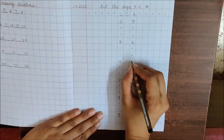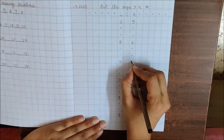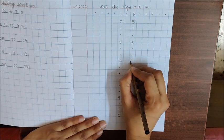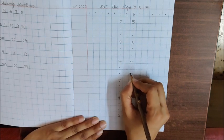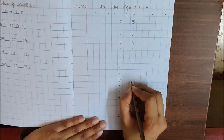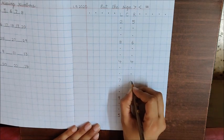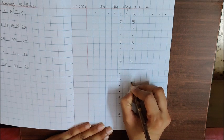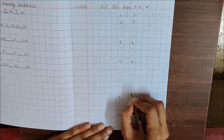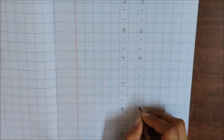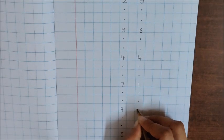Again, put 2 dots. Now, below the dot, write number 4. Again, put 2 dots. 1, 2. Now, below 7, children, write number 1. Again, put 2 dots. 1, 2. Now, below the dot, write number 3.